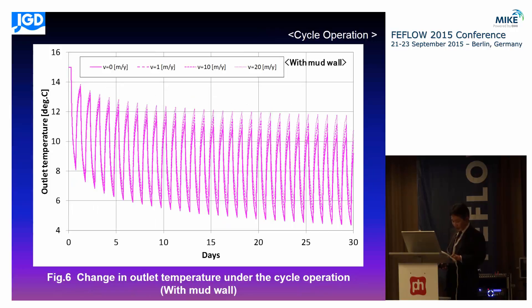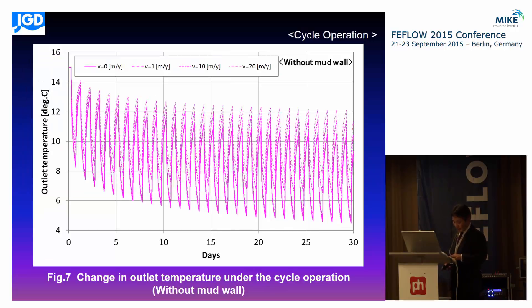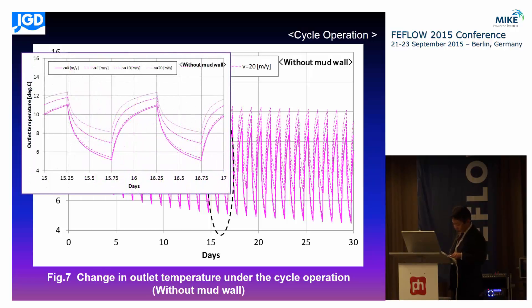Figure 6 shows cycle operation with mud wall. Regarding the daily operation, Figure 6 shows that regardless of mud wall existence, outlet temperature decreased every day as time elapsed. The difference in temperature drop of the outlet water was shown according to the groundwater flow velocity. On the other hand, the case without mud wall is shown in Figure 7. The changing trend is similar to the case with mud wall, but in this case, when the groundwater flow velocity is faster, the temperature drop is smaller and temperature recovery becomes more rapid.